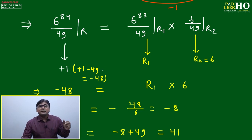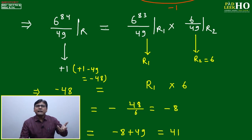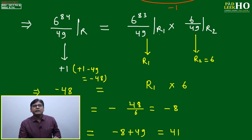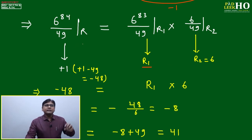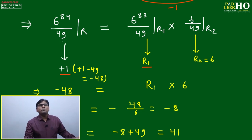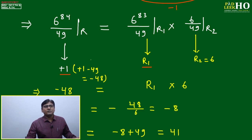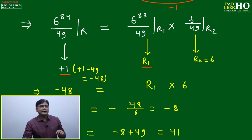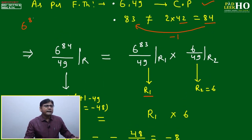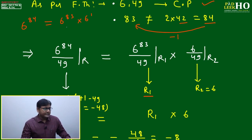Pay close attention for the next 2-3 minutes — this is vital. We use the equality sign as a key tool. Assume the remainder of 6^83 ÷ 49 is r1. Now consider one step ahead: 6^84 ÷ 49. Since the Euler number of 49 is 42 and 84 is exactly 2 × 42, the remainder of 6^84 ÷ 49 equals +1.